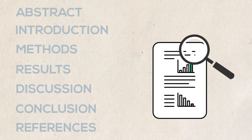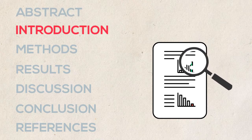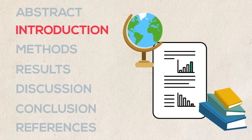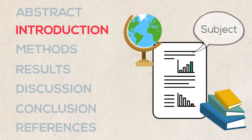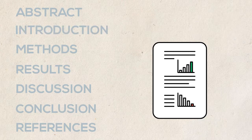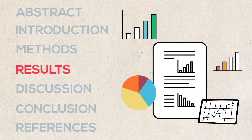Next, skim the introduction to get a little more information on the background and context of the article's main subject. Now skip to the results to look for any graphs or figures that describe the data and results obtained by the study. This will tell you what the study actually found.